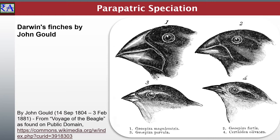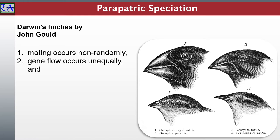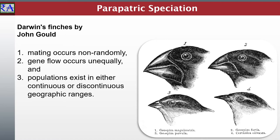This mode of speciation has three distinguishing characteristics. One: mating occurs non-randomly. Two: gene flow occurs unequally. And three: populations exist in either continuous or discontinuous geographic ranges. This distribution pattern may be the result of unequal dispersal, incomplete geographic barriers, or divergent expressions of behavior, among other things. Peripatric speciation predicts that hybrid zones will often exist at the junction between the two new populations.